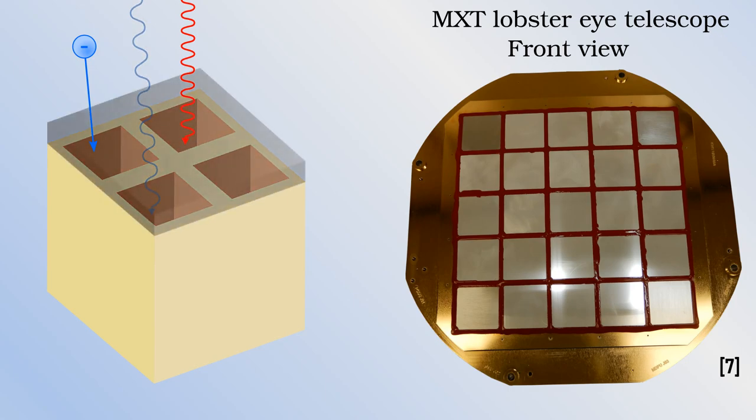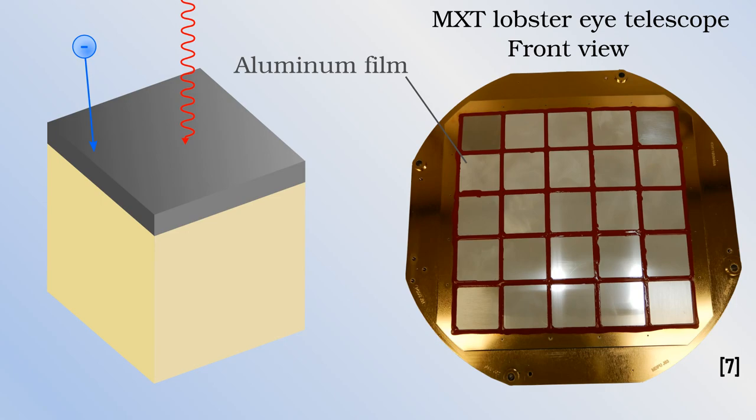In order to block out visible and ultraviolet light, a thin layer of aluminum is deposited over the top. This layer does not stop the X-rays, but it is largely opaque to other waves.